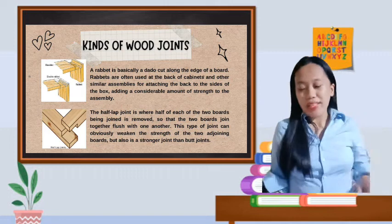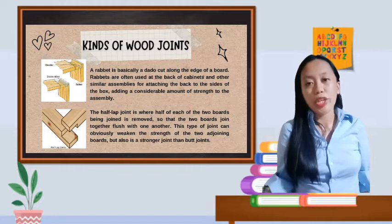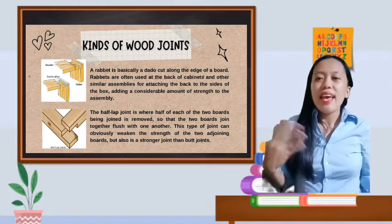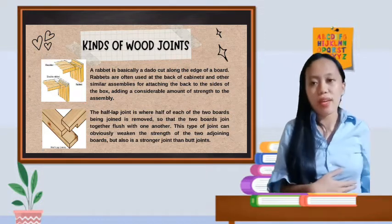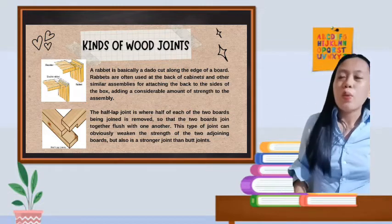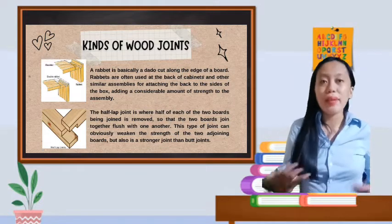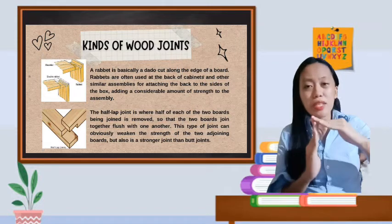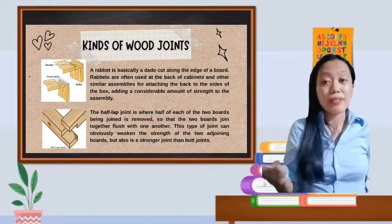Let's proceed to the third one, the rabbet. A rabbet is basically a dado cut along the edge of a board. Rabbets are often in use at the back of cabinets and other similar assemblies for attaching the back to the side of the box, adding a considerable amount of strength to the assembly. When we say rabbet, it has, if you notice, it's often used in cabinets. It has another box so they overlap to make them stronger. But it's a very small box if you notice in the picture.